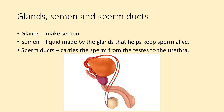The glands, semen and sperm ducts. The glands make semen — semen is the liquid made by the glands that helps keep the sperm alive. When a male ejaculates, most of that fluid is actually semen, not sperm. Sperm cells are tiny and need that fluid to nourish them while they swim towards the egg. The sperm duct carries sperm from the testes up to the urethra, where the semen and sperm mix before being carried out through the penis.